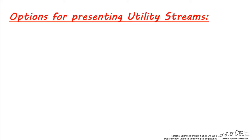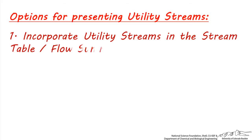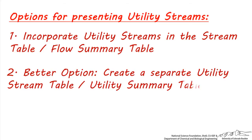In terms of presenting the physical properties of each of these utility streams, there are two choices. You can incorporate the utility streams in the same table as the process streams and include the same level of detail as you would see in a stream table. Or better yet, you would put these utility streams in a separate utility stream table, also sometimes called a utility summary table.